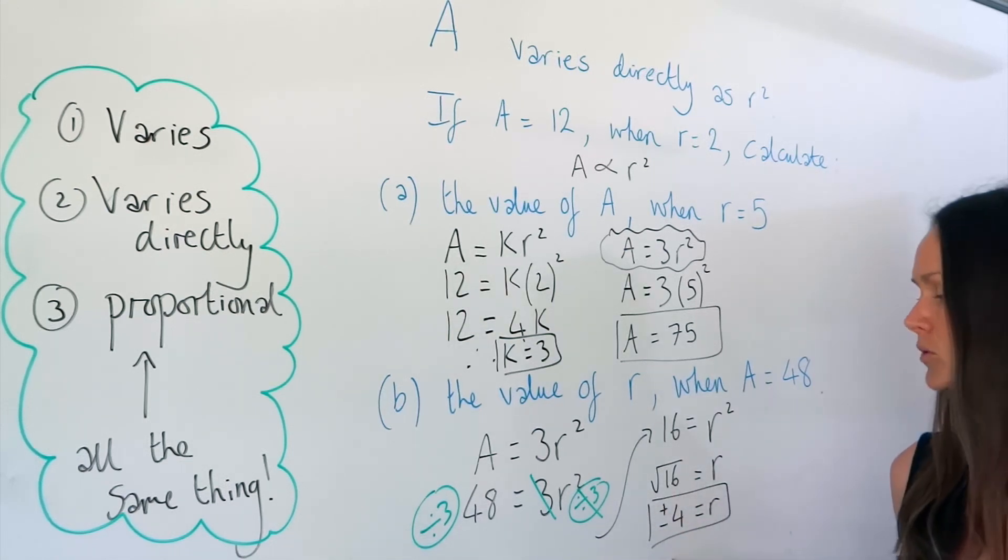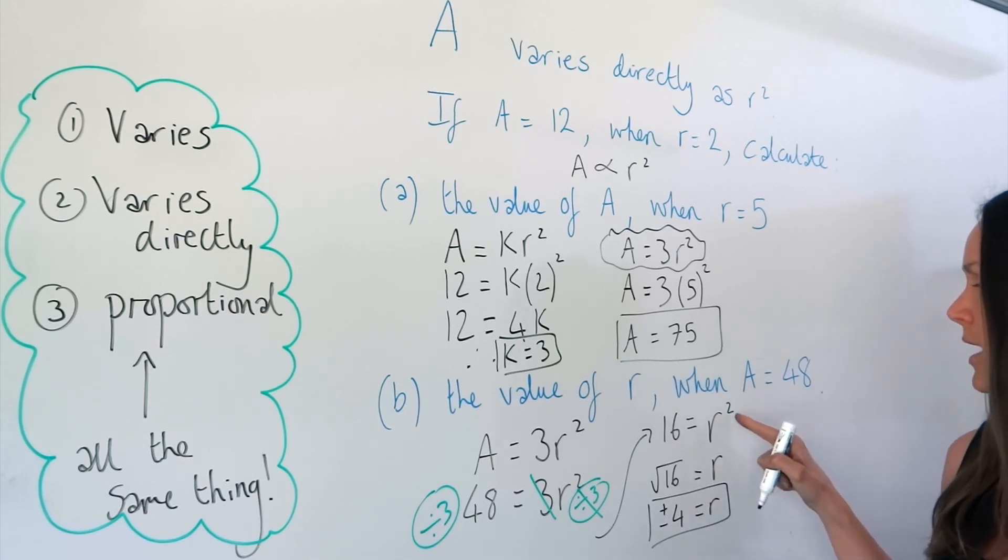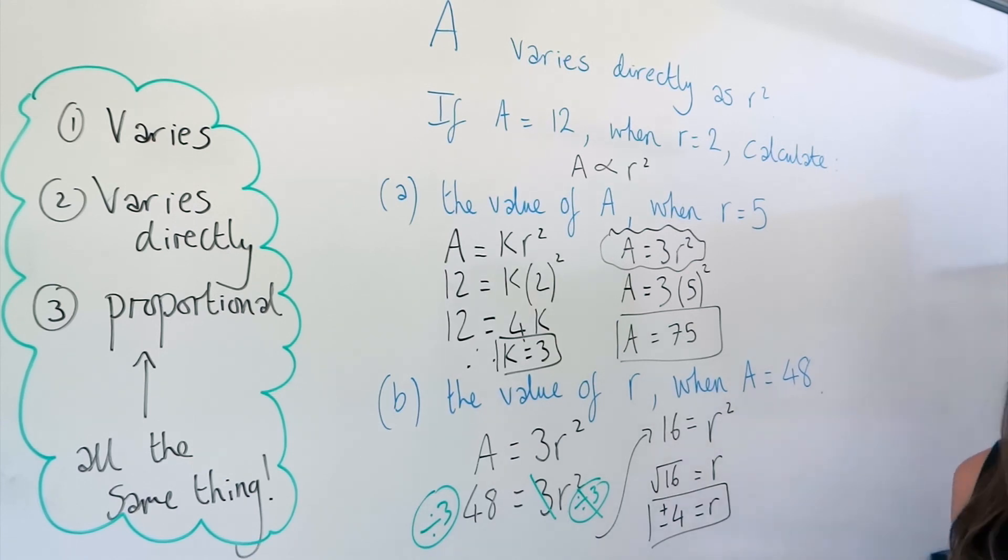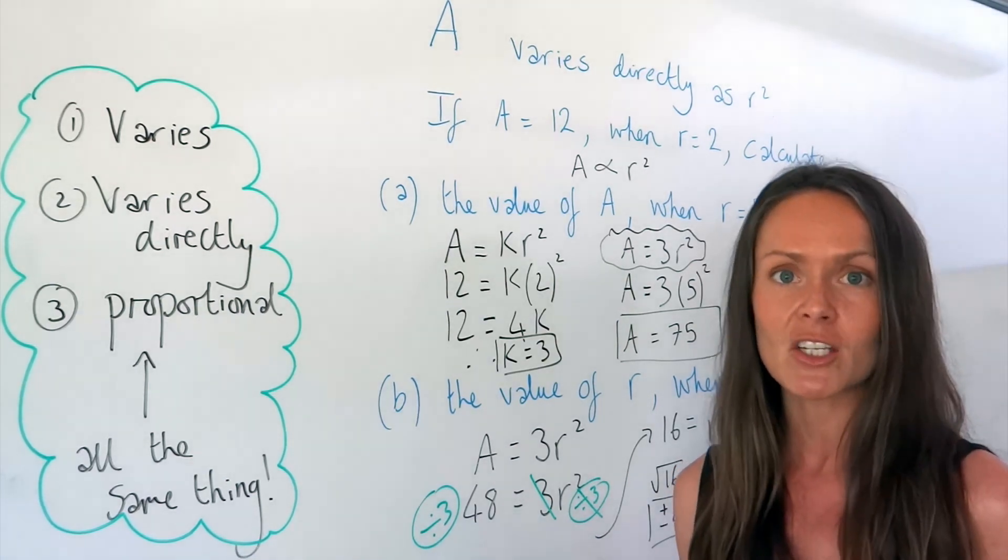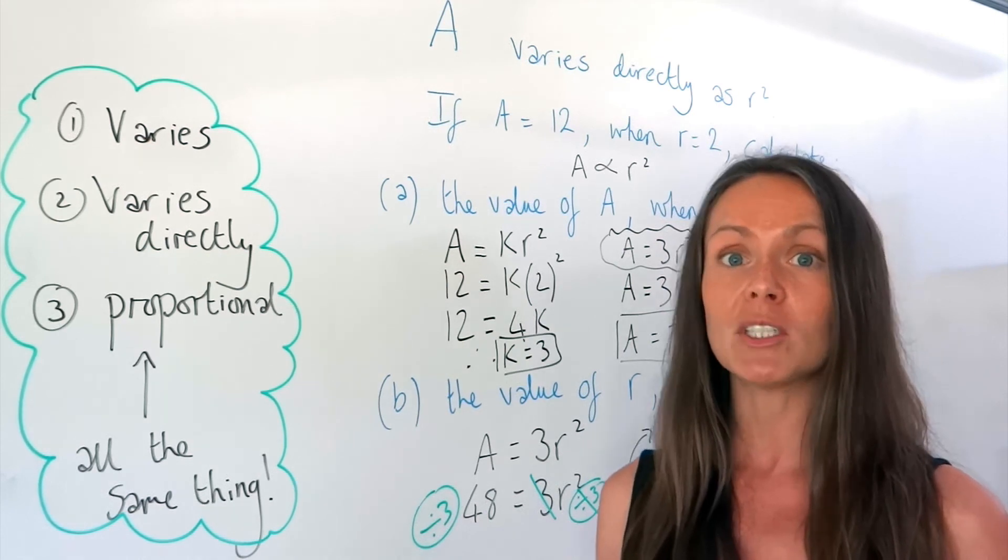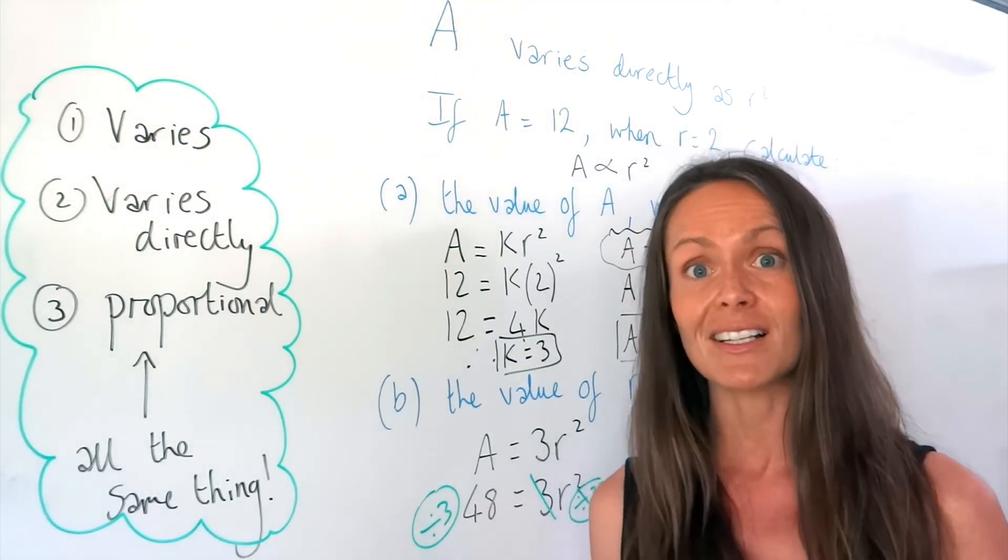So when I square root both sides, I have to remember there are two values for r, one positive and one negative. And you can just write it like that if you want to. And when you square root the square, well, that will just cancel the square symbol. OK, so there are two examples on proportion or variation. In my next video, I'll be showing you inverse proportion, which is a little bit different.